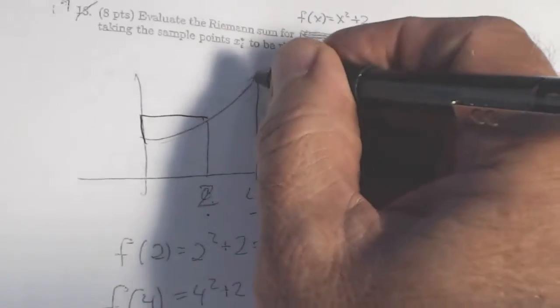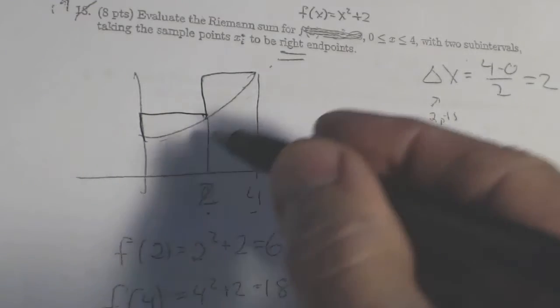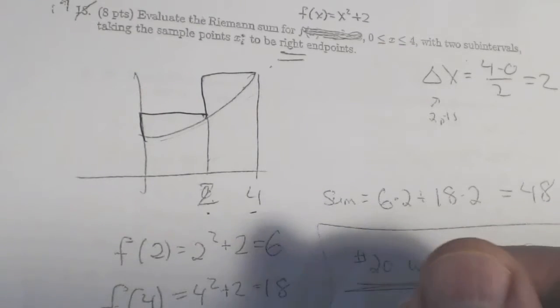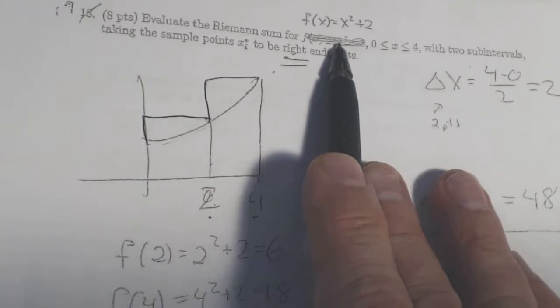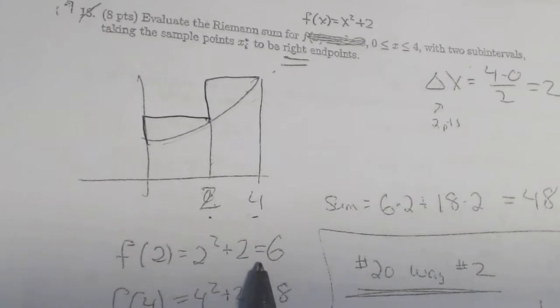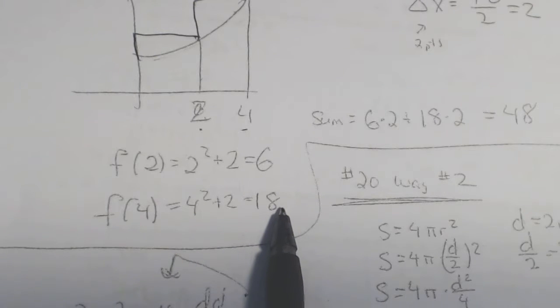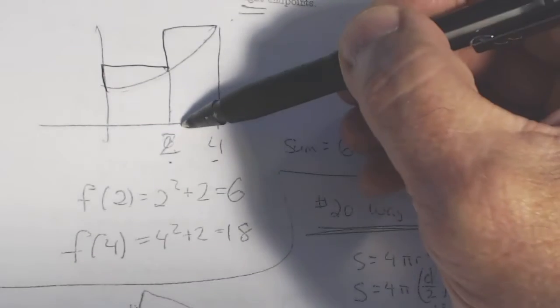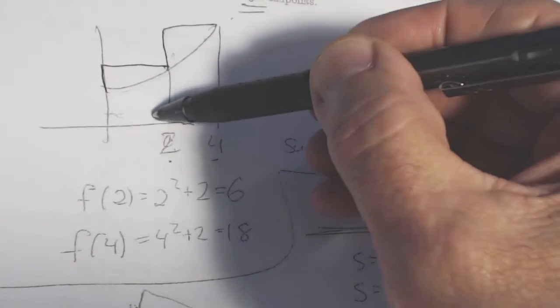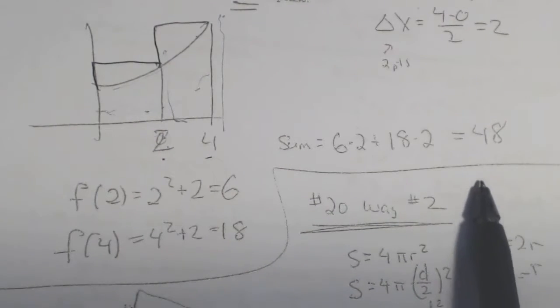My rectangles are going to look like this. They're going to be over approximations because the function is increasing, and I have right endpoints. Okay? Now, I need f of 2. Well, the function was x squared plus 2, so that's 2 squared plus 2 is 6. I need f of 4. That's 4 squared plus 2 is 18. So it's length times width. It's 6 for my first height times a width of 2 plus 18 for my second height times a width of 2, and you get 48.